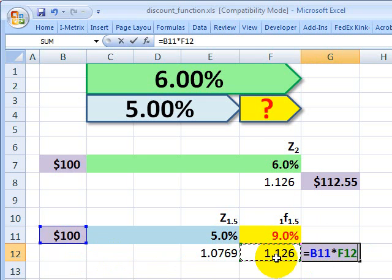Just to check my final value, I'll take the $100, multiply that, and we see that I got the same terminal value, $112.55, regardless. That verifies for me that this would be the market-implied forward rate.